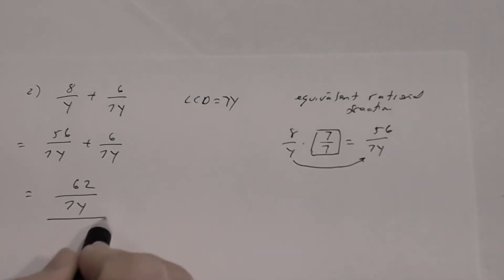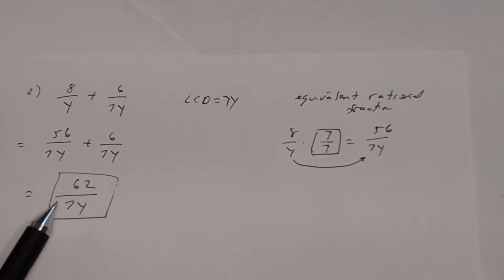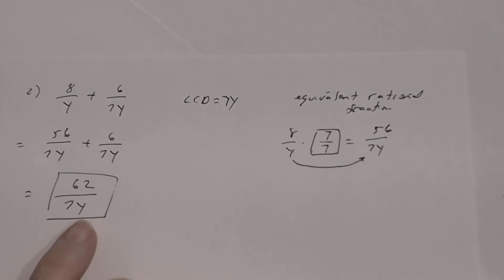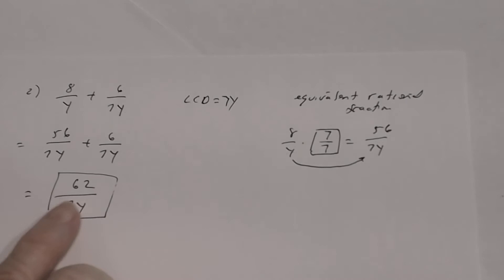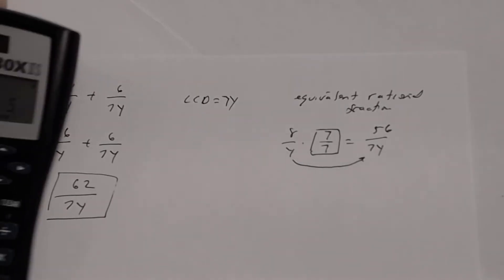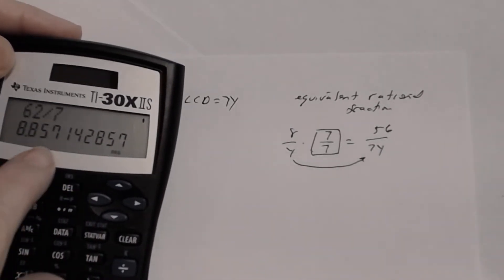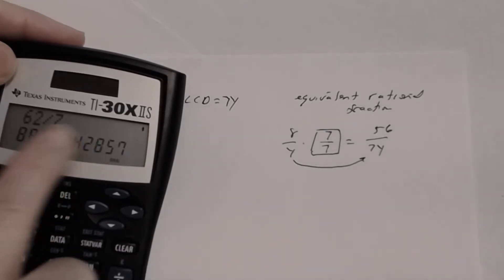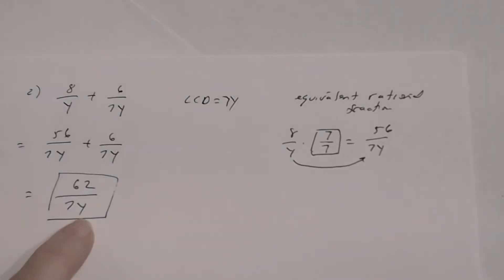At the end of every problem, check whether you can reduce the result. Here, 62 is not divisible by 7, so 62/7y is fully simplified. That's all you had to do for number 2.